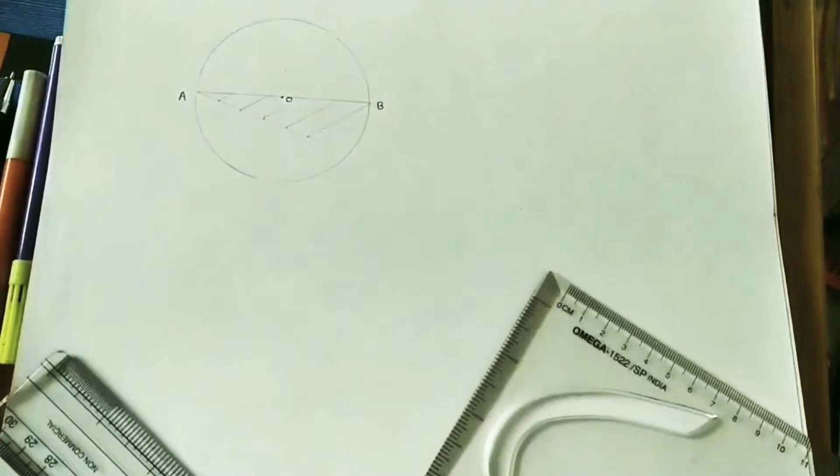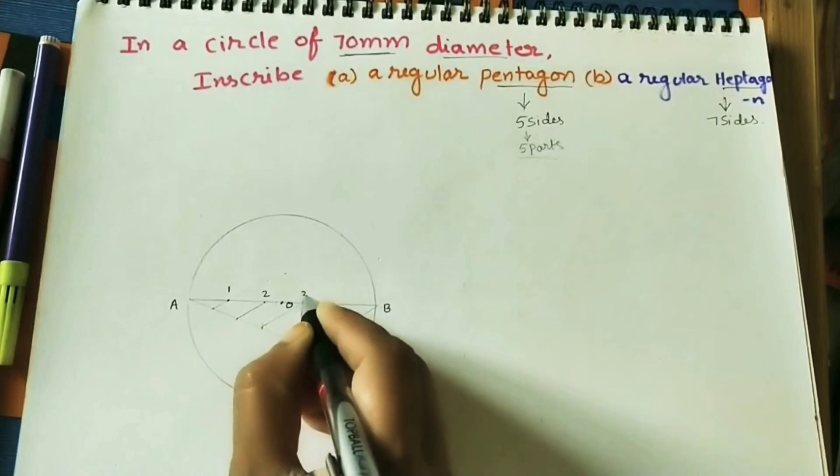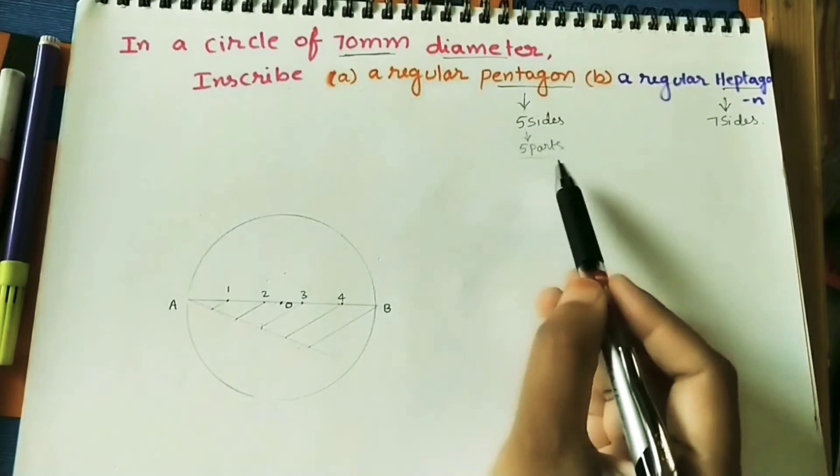So, these are the 5 equal parts: 1, 2, 3, 4, 5. All 5 parts. Now, here for doing the pentagon.